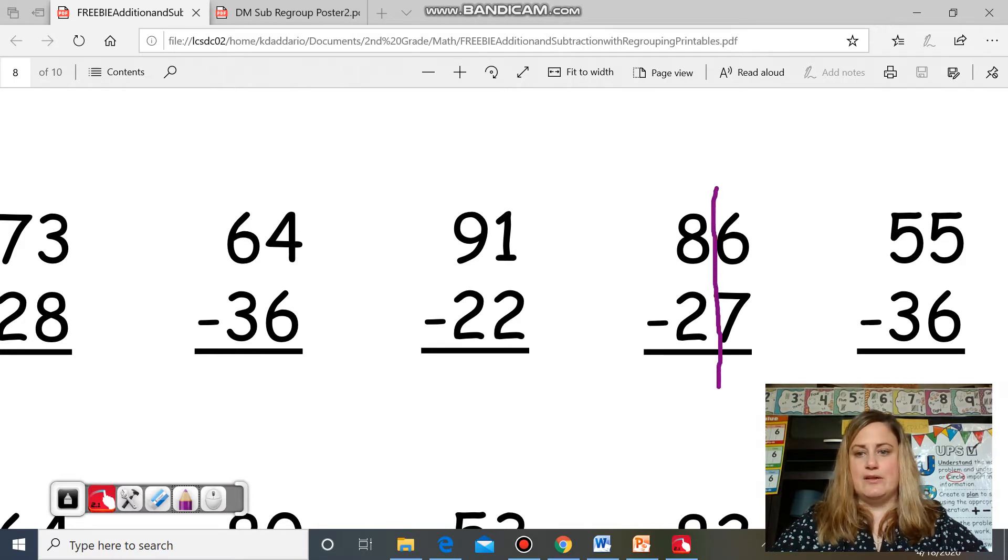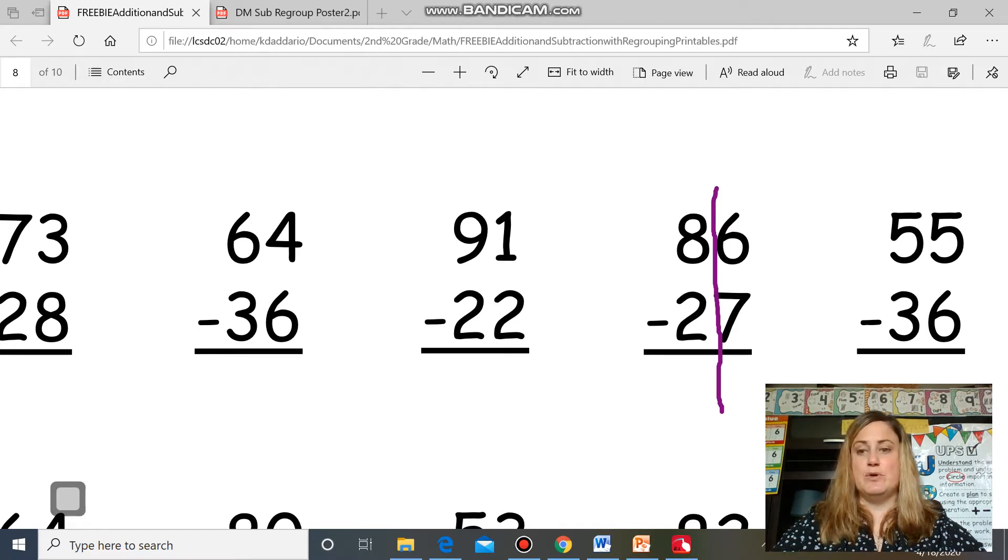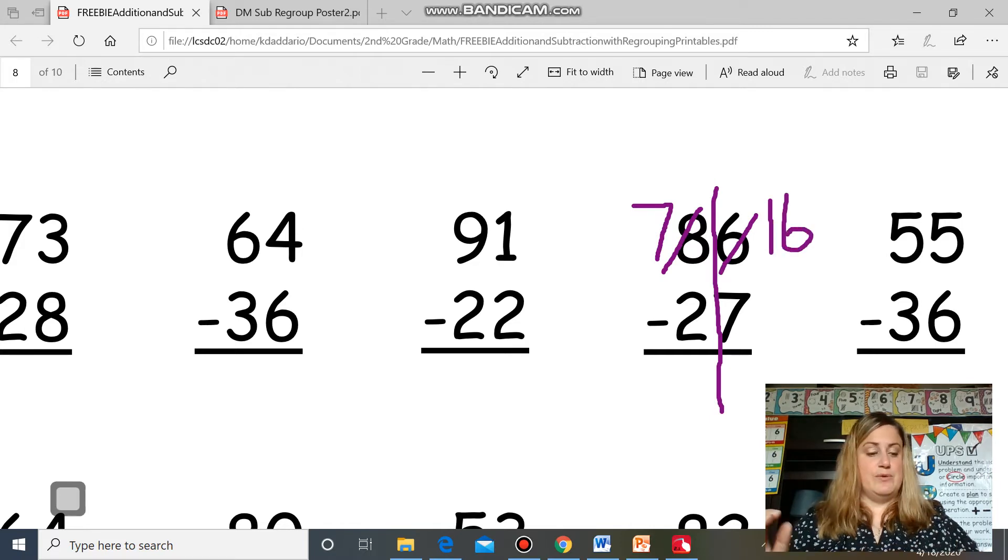We already had our line drawn. We said to ourselves, more on top or more on the floor? We said more on the floor, we went next door, got 10 more. So now there's seven tens in the tens place, and we added that 10 to the 6 to make 16. We were just getting ready to subtract.